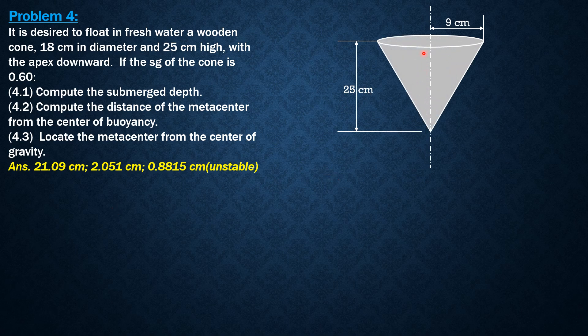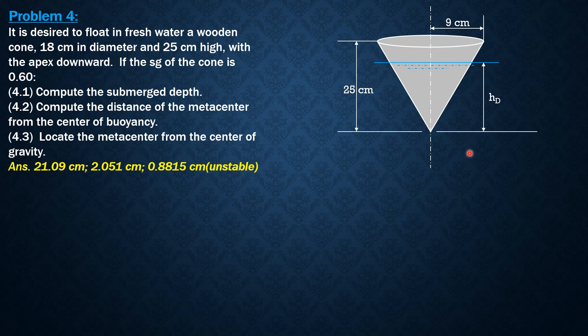So this is the figure. This is the cone. These are the details. The radius of the cone is 9 cm, the depth is 25 cm. This is the waterline section expected. The depth of the submerged depth we will denote by HD. The waterline section is circular because this is a circular cone, and we will denote the radius of the waterline section as X.